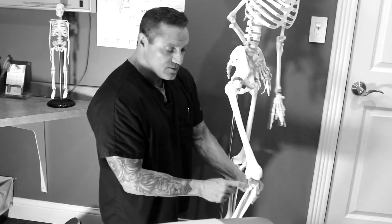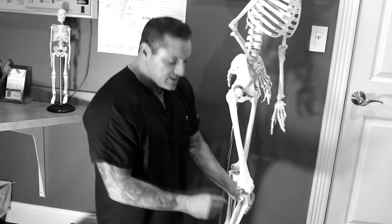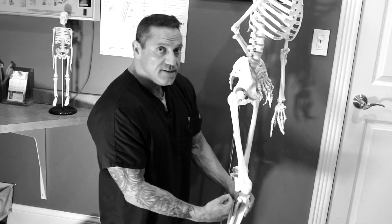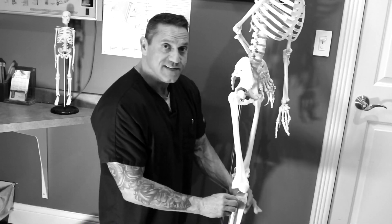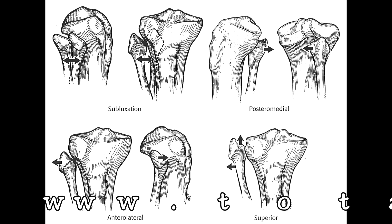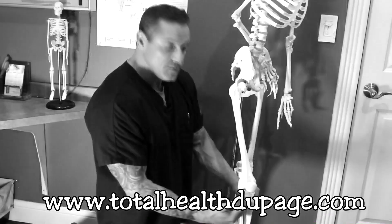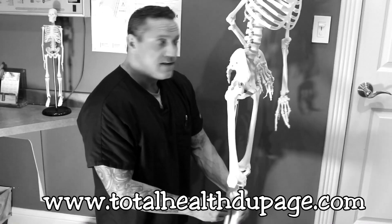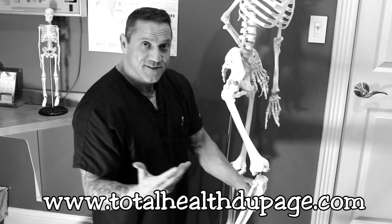When the proximal tibial-fibular joint is affected, it could get displaced either anteriorly or posteriorly. Nine times out of ten, in my experience, I've found it displaced anteriorly. I'm going to show you how to correct it if it moves anterior, and also posterior, because those are two different types of adjustments. It's very commonly missed — and I've done it myself.